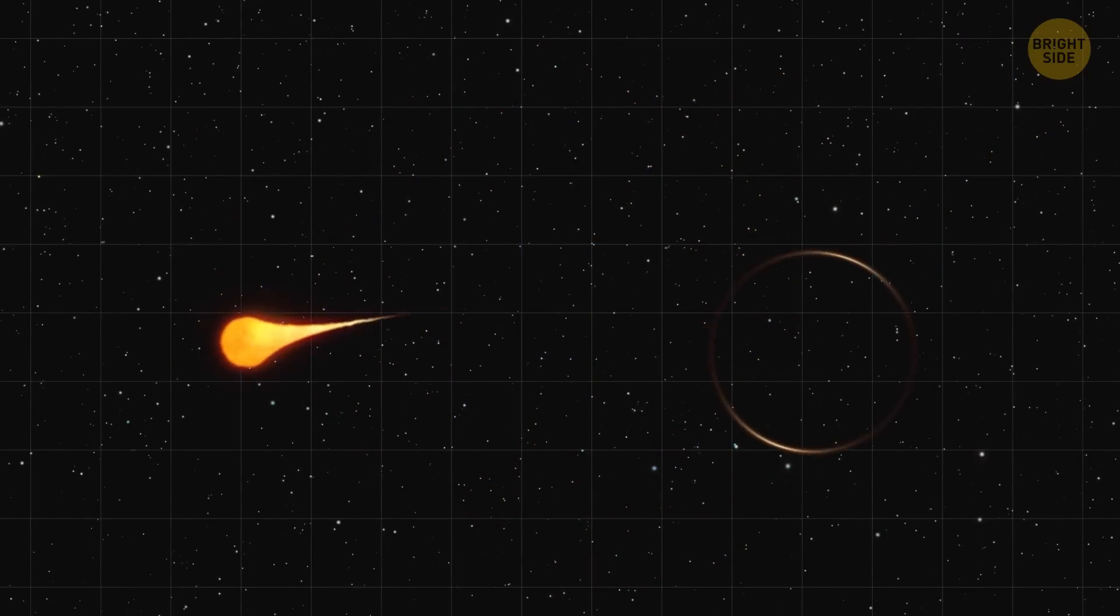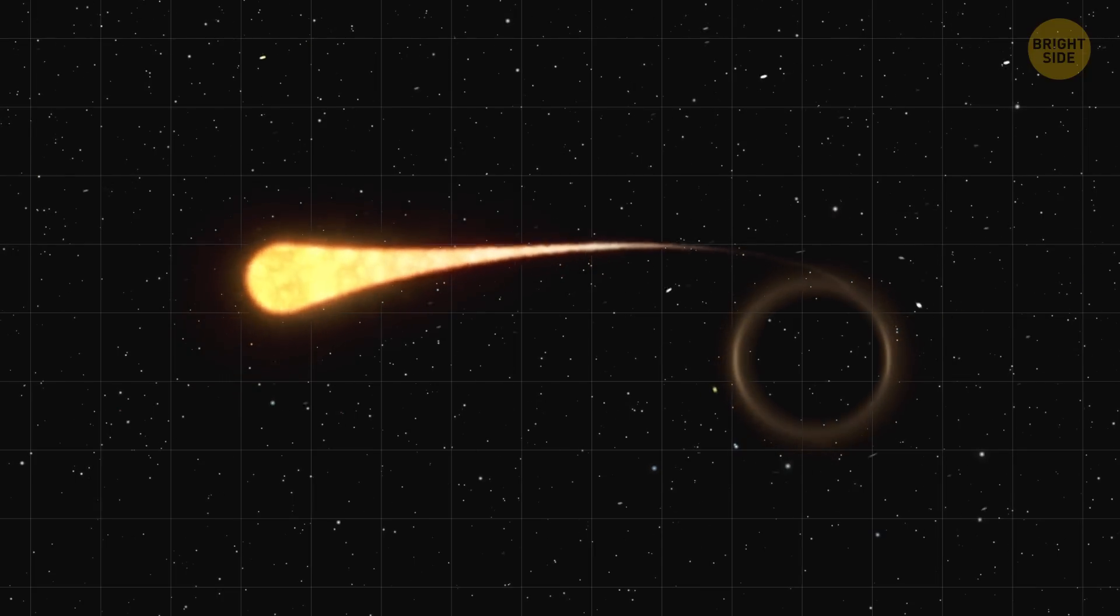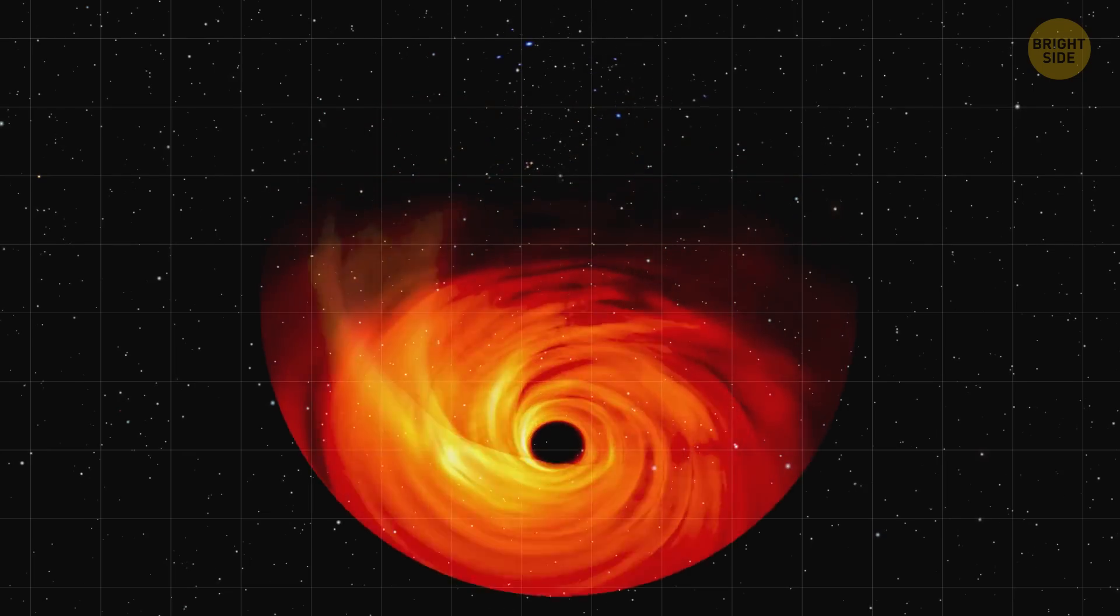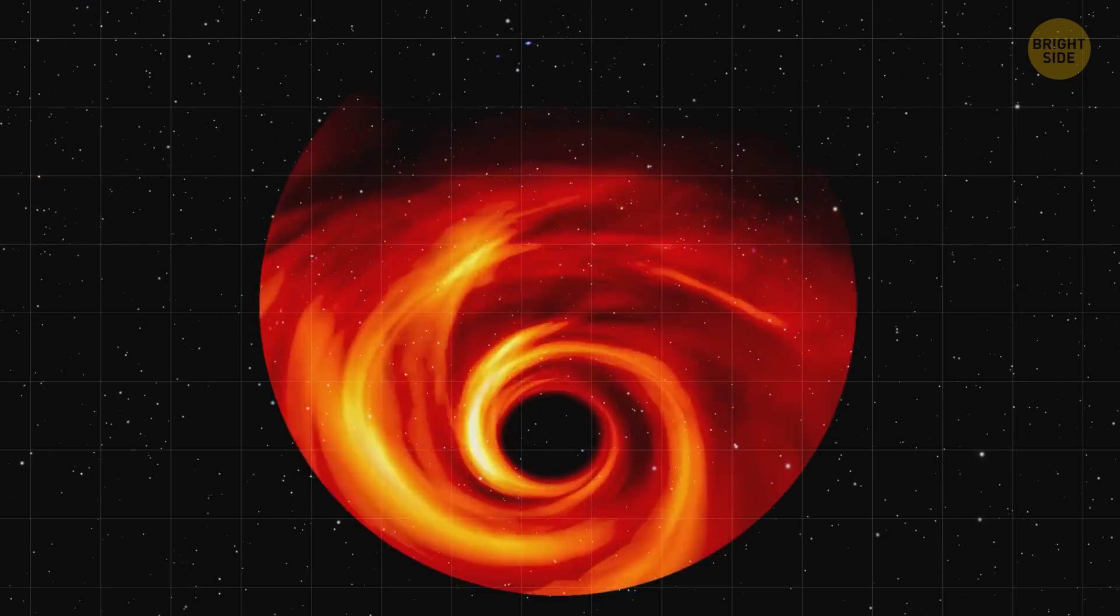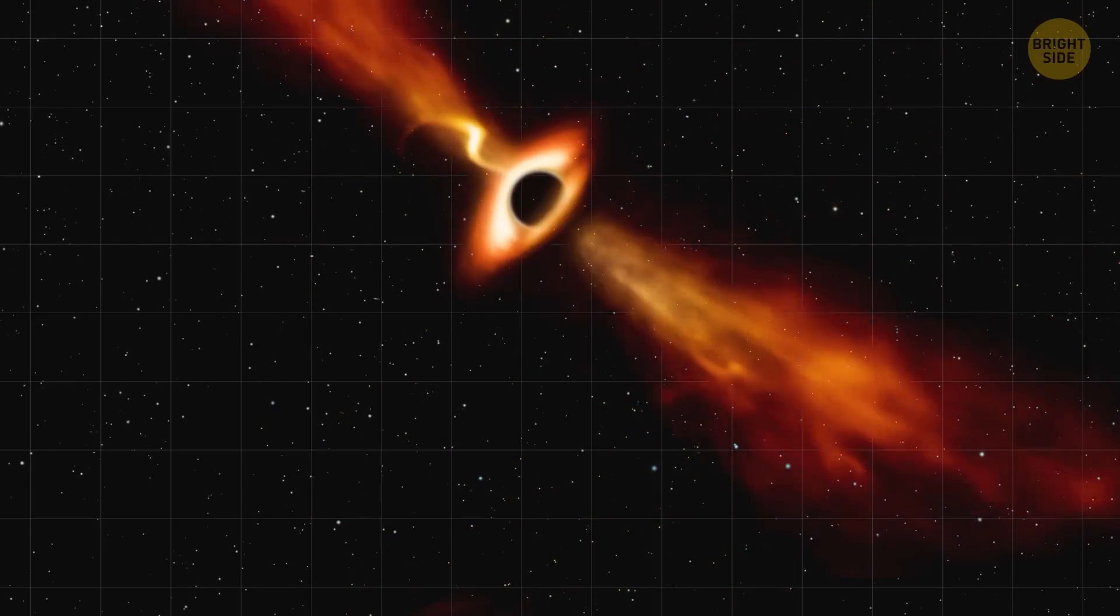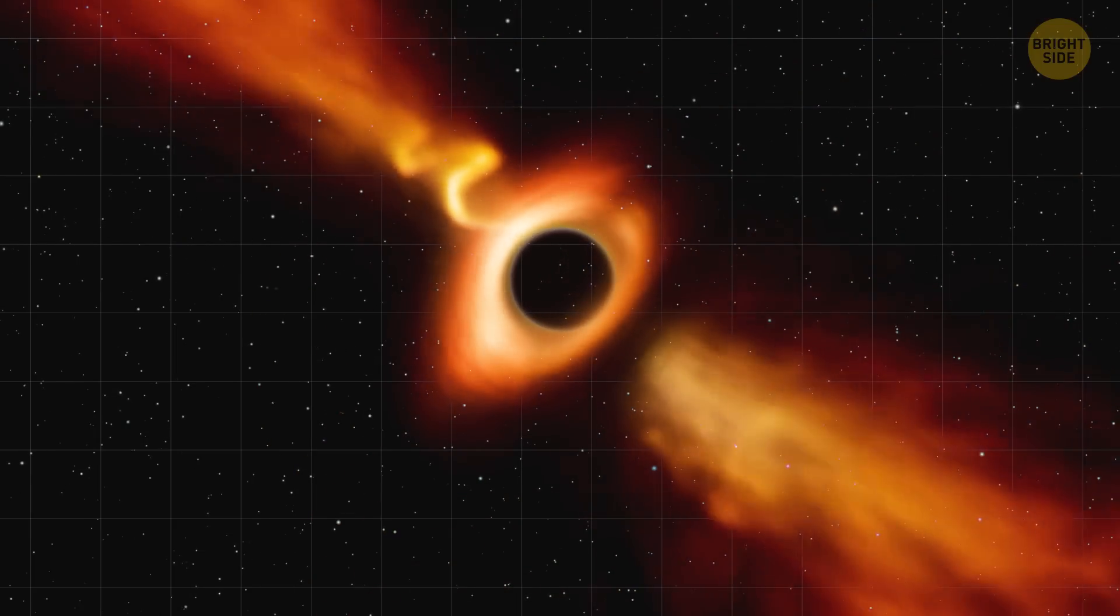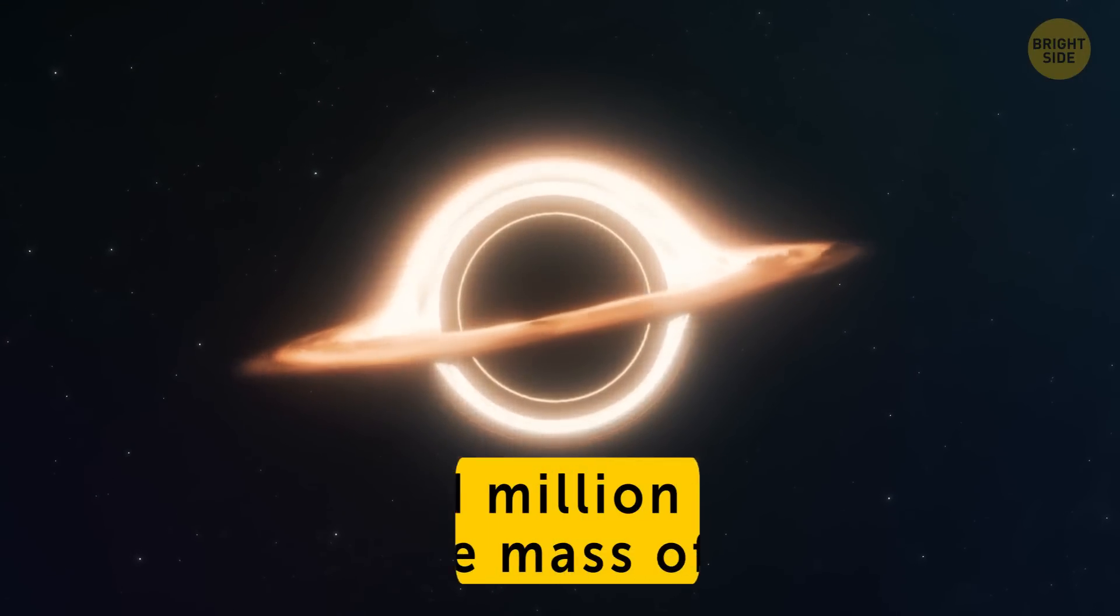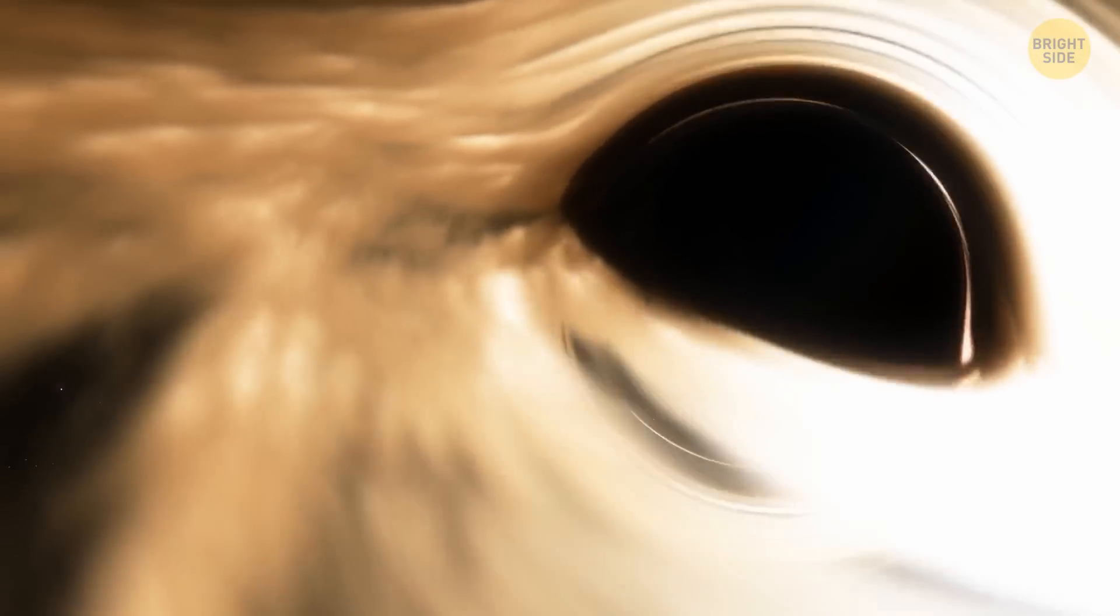At first, astronomers thought that it was caused by a supermassive black hole pulling in a massive star. But after some studying, they think it's probably because a giant black hole had some crazy dinner. It probably ate a large amount of gas, possibly a giant molecular cloud. The Titanic black hole in question is between a hundred million and a billion times the mass of the Sun. This is one of the most massive known and active black holes.